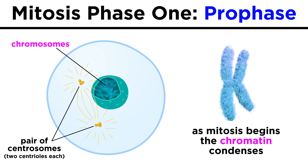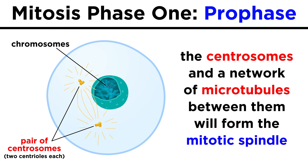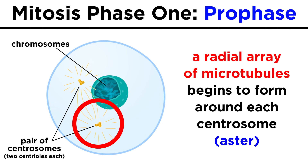Then as mitosis begins, during the prophase, the chromatin becomes tightly coiled and forms the shape we are familiar with — chromosomes with sister chromatids linked by a centromere. It is also in the prophase that the mitotic spindle begins to form, made up of the two centrosomes and microtubules that begin to form between them. Each centrosome also has a radial array of microtubules surrounding it, called an aster.